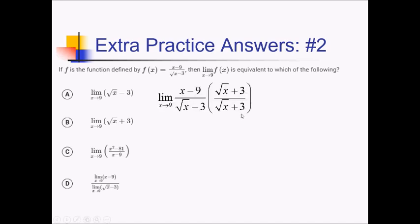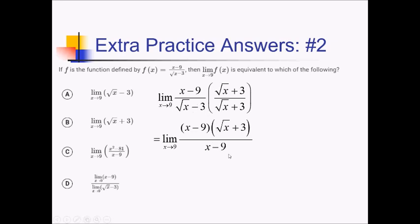The reason this works: in the denominator, you're doing a minus b times a plus b, which always gives us a squared minus b squared. So you're essentially doing radical x squared minus 3 squared, which gives you x minus 9. No radical. And then x minus 9 and x minus 9 cancel out, leaving us with just the limit as x approaches 9 of radical x plus 3. They didn't ask us to solve it — they gave us an answer choice with this in it, which was choice B.